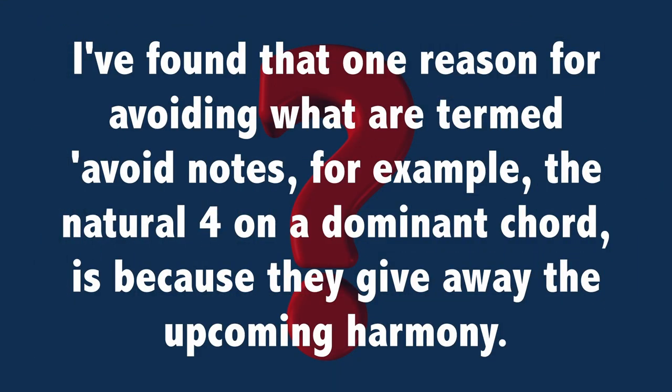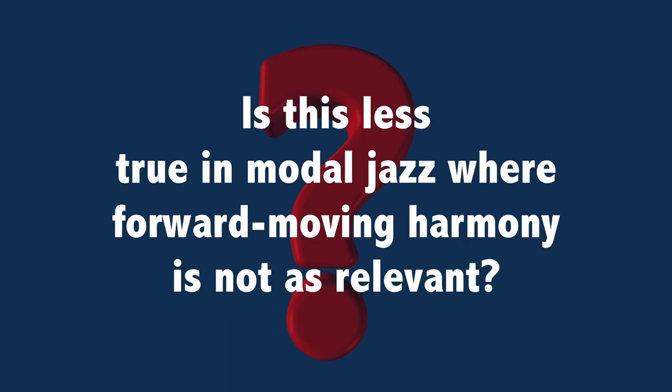One reason for avoiding so-called avoid notes — for example, the natural 4 on a dominant chord — is because they give away the upcoming harmony. Is this less true in modal jazz, where forward-moving harmony is not as relevant? It does make sense, in light of what I've said about voice leading and the idea that notes are more equal in modal harmony. It also relates to the question about why Dorian is used more frequently than Aeolian. When a Dorian scale is played over a minor 7 chord, there are no avoid notes — every note of the scale sounds harmonious against the chord.